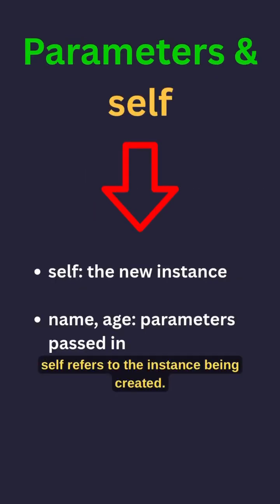Self refers to the instance being created. Parameters after self receive the arguments you pass when instantiating.